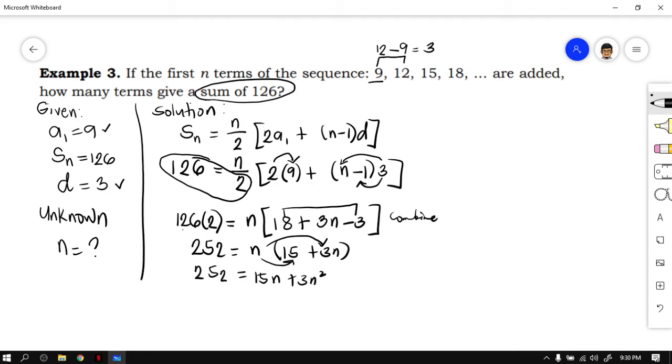As you can observe, you already have squared here, which means this equation leads to a quadratic equation. Therefore, we have to equate it to 0. So 0 is equal to, arranging it from highest degree to the lowest degree, 3n squared plus 15n. And positive 252 will go to the other side of the equation, so it will become negative 252.